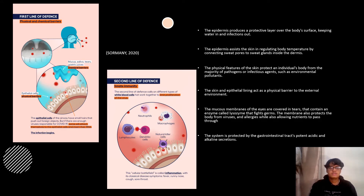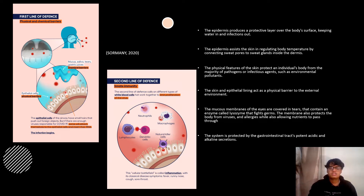The epidermis is constituted of stratified squamous epithelial tissue made up of differentiated suprabasal keratinocytes and proliferating basal cells, which produce an extracellular matrix that divides constantly when the epidermis's outer layer sheds. The physical features of the skin protect an individual's body from the majority of pathogens or infectious agents, such as environmental pollutants. The skin and epithelial lining act as a physical barrier to the external environment.